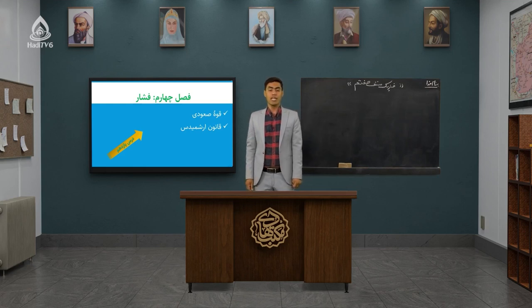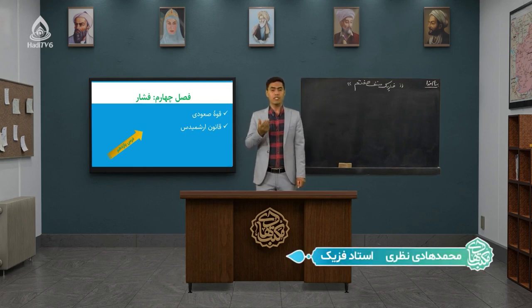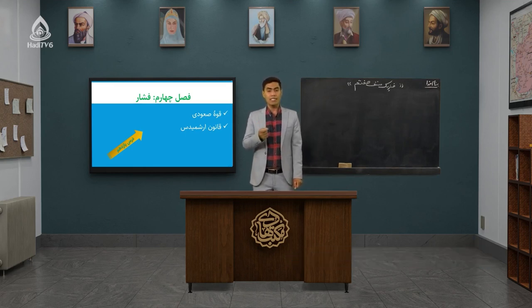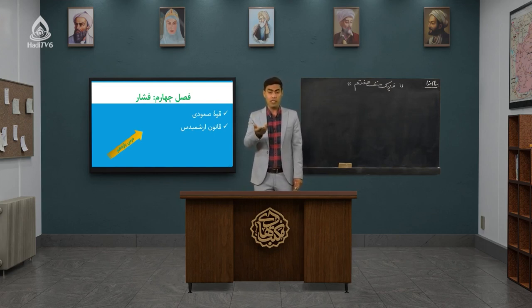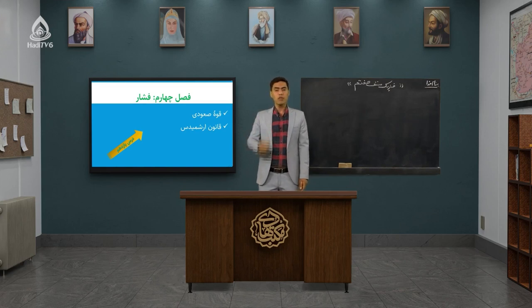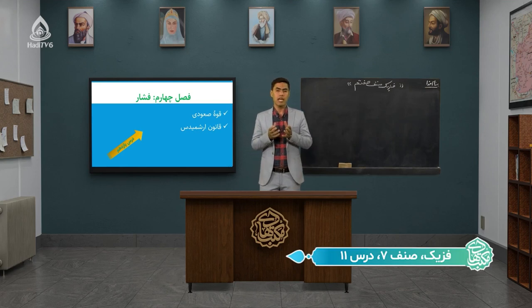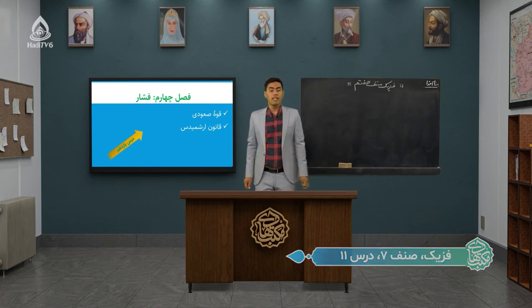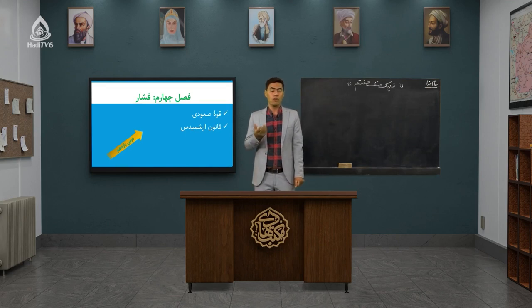اما قبل از اینکه وارد درس امروز شویم، یک مروری بر درس جلسه قبل داریم. در درس جلسه قبل ما یک اصل بسیار مهم در فیزیک به نام اصل پاسکال بررسی کردیم. اصل پاسکال چی میگفت؟ اصل پاسکال میگفت که اگر بر یک مایع فشاری وارد شود، مایع این فشار را به تمام نقاطی که با مایع در ارتباط هستند وارد میکند. وسایلی که از طریق اصل پاسکال ساخته میشوند، بالابرهای هیدرولیکی هستند که طرز کار آنها را برای شما گفتیم.